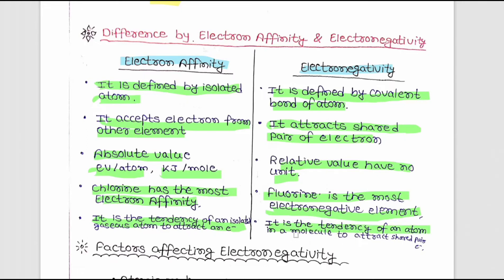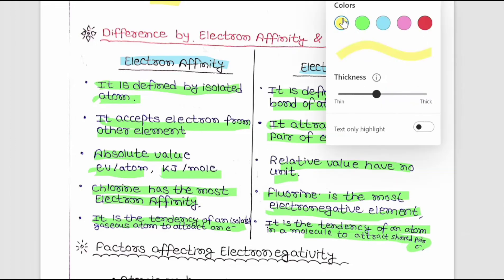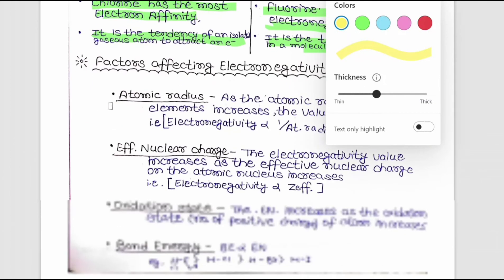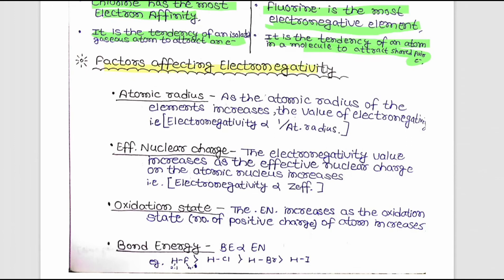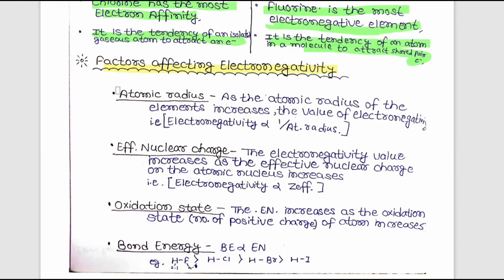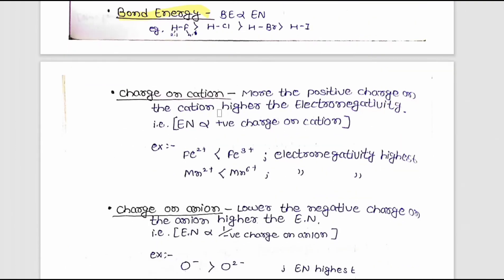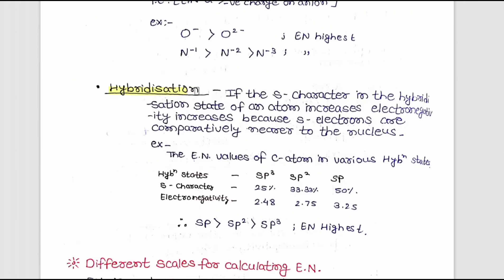Electron affinity is the tendency of an isolated gaseous atom to attract an electron, while electronegativity is the tendency of an atom in a molecule to attract the shared pair of electrons. Factors affecting electronegativity include atomic radius, effective nuclear charge, oxidation state, bond energy, charge on cation, charge on anion, and hybridization.